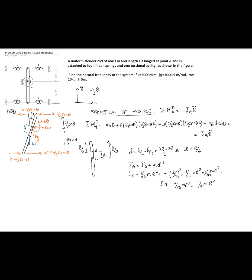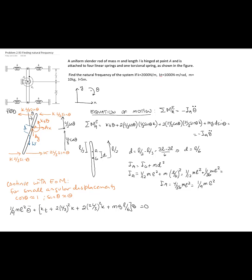Continuing with the equation of motion and applying the small-angle approximation — cosine theta ≈ 1 and sine theta ≈ theta — we get (1/9)ML² times angular acceleration, with all terms multiplied by theta: the torsional spring constant, plus 2 times (L/3)² k, plus 2 times (2L/3)² k, plus MgL/6.